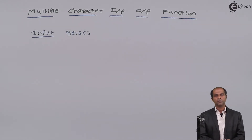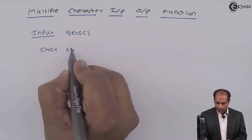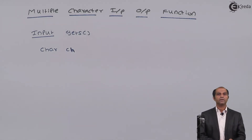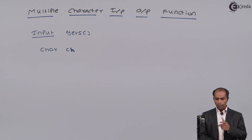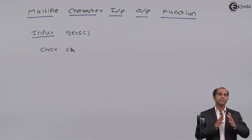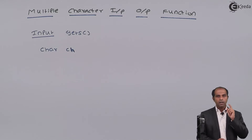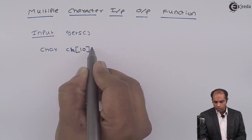Before we use `gets`, we need to understand what type of variable to use. If I define a character variable as `char ch`, it can only store one character. But I need a variable that stores a set of characters. Should I define multiple variables? No — because then you'd need multiple `getchar` instructions. Instead, I'll use a character array: `char ch[10]`.